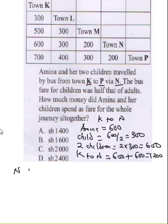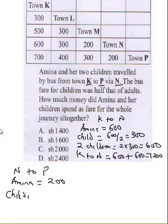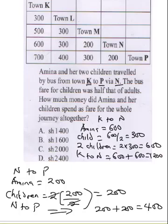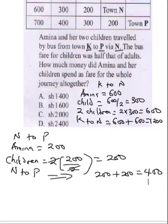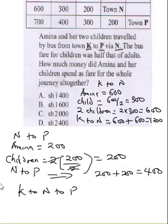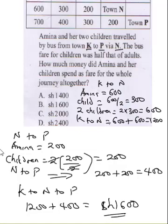From N to P, Amina spent 200 shillings. For her two children, it's 2 times 200 over 2, which is 200. So from N to P, they spent 200 plus 200 = 400. To get the total journey from K to N to P, it's 1,200 plus 400, giving a total of 1,600 shillings. The correct answer is B.